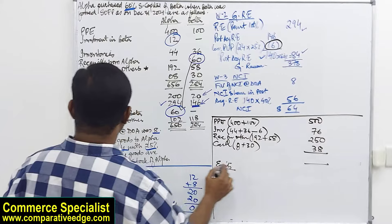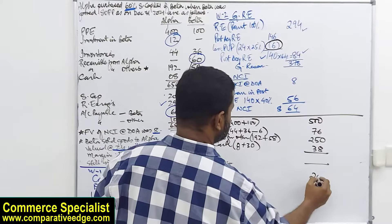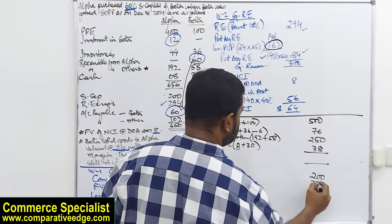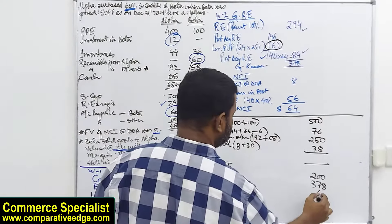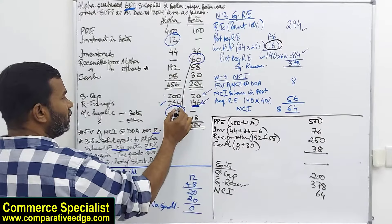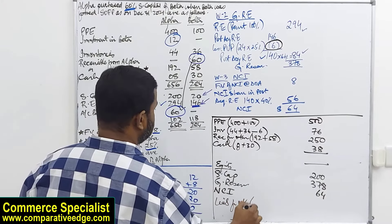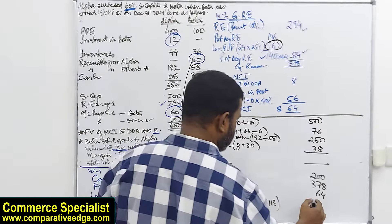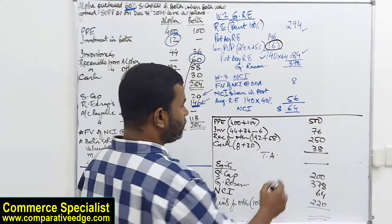On the equity side: share capital of parent is 200. Group reserves as calculated: 378. Non-controlling interest: 64. Accounts payable: the 60 intra-group payable is cancelled with receivables; only external payables remain — 102 plus 118 equals 220. Total equities and total assets both come to 862.